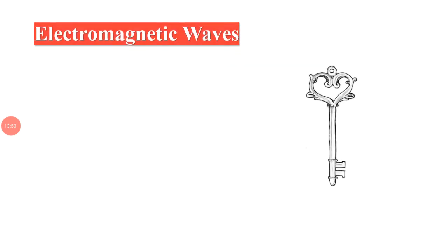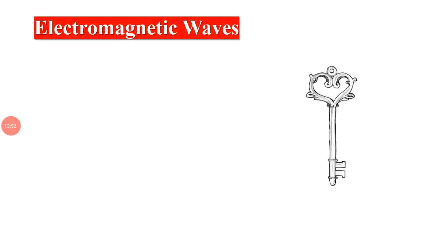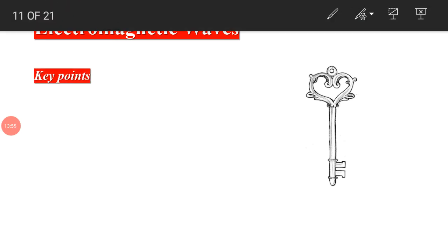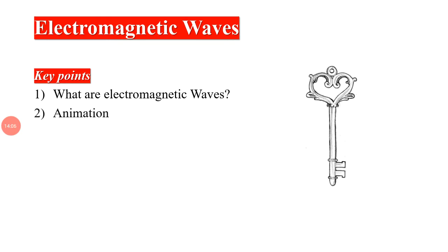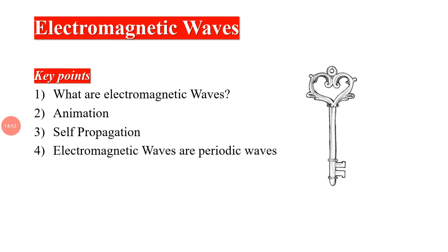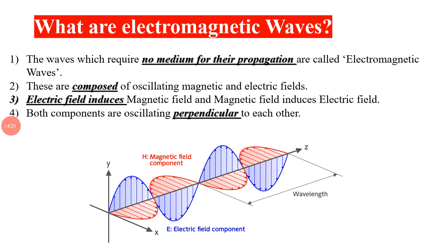Next we move to the topic of electromagnetic waves. The key points to cover are: what electromagnetic waves are; viewing the animation; discussing the self-propagating mechanism; the periodic nature of electromagnetic waves; and finally a brief overview of the classification of electromagnetic waves.